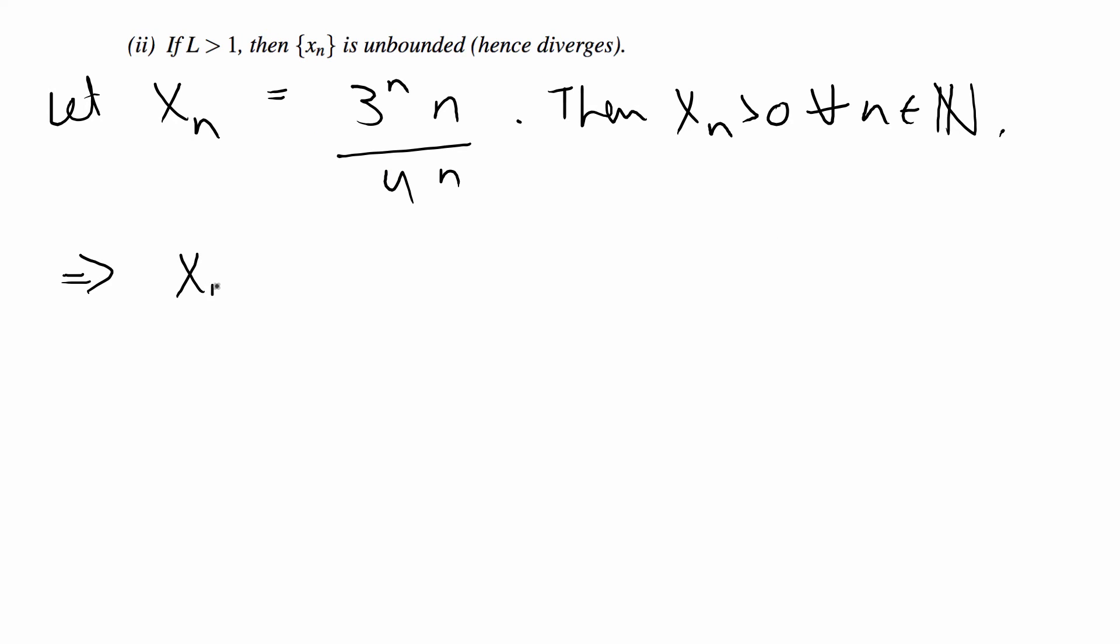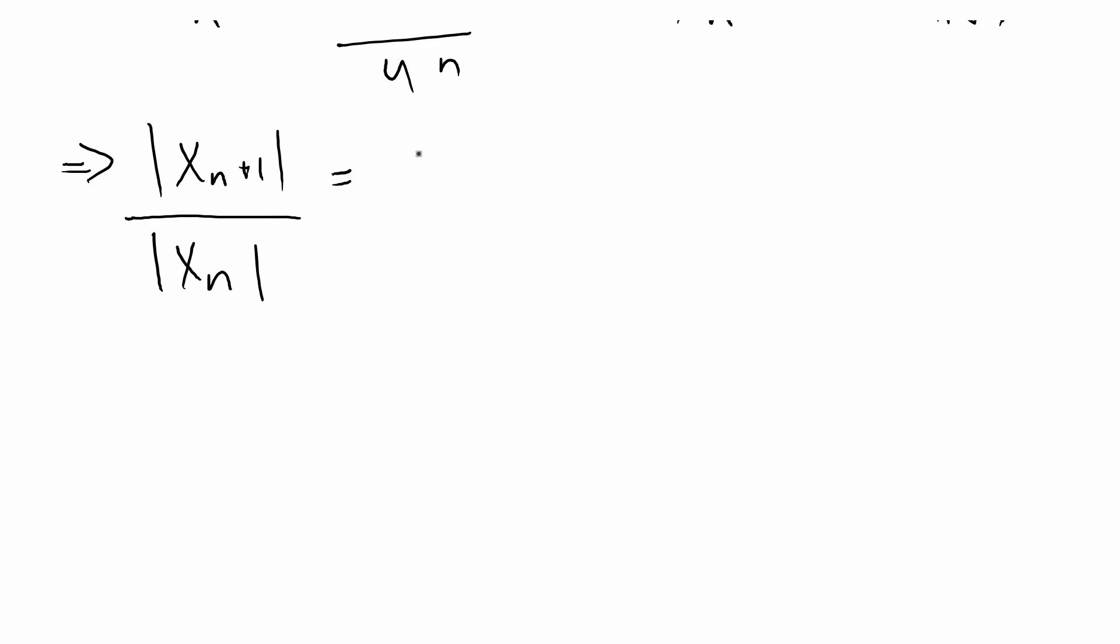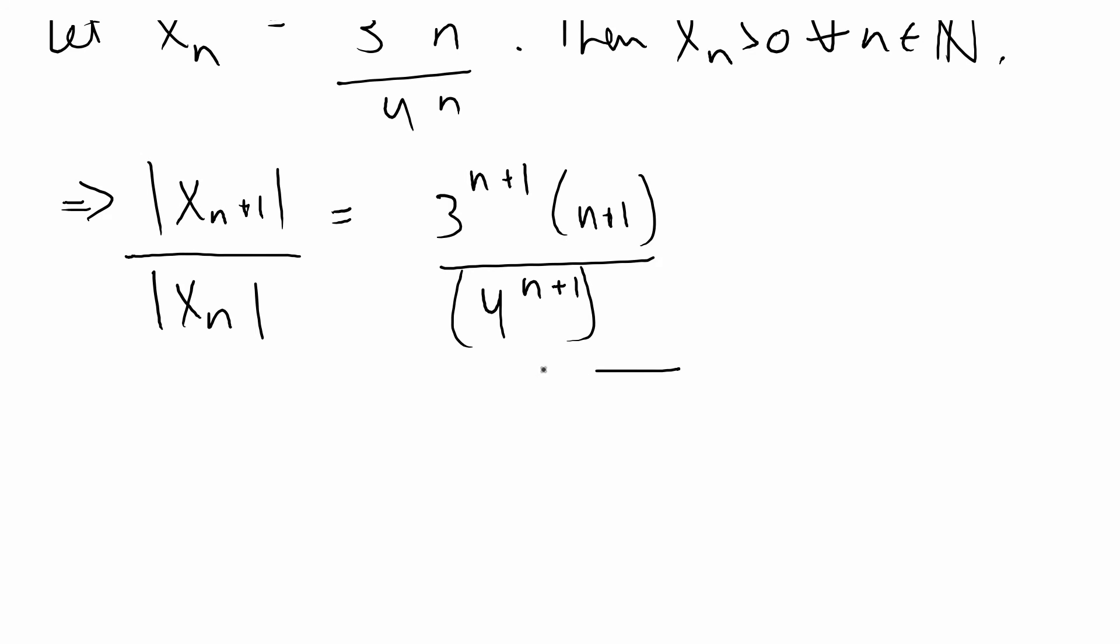So we have x_{n+1} over x_n and these are the absolute values by the way. I guess I left that out. So the absolute value of x_{n+1} is going to be 3 to the n+1 times n+1 over 4 to the n+1, and then instead of dividing again I'm just going to multiply by the reciprocal, so that's going to be 4 to the n over 3 to the n times n.